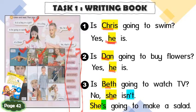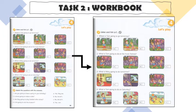Now I want you to continue asking about the other pictures. Copy numbers one, two, and three, then continue for numbers four, five, six, seven, eight, and nine. You will have nine questions and answers. Do your best! For activity two, please complete your workbook page 33, Activity 1 — listen and tick. Look at number one: 'Where is Tom going to go tomorrow?' Listen carefully and get ready with your pencil to tick.